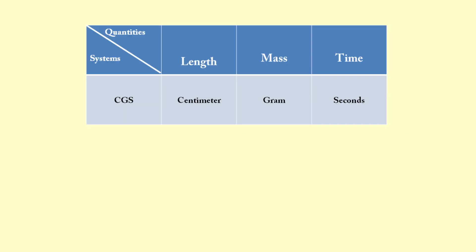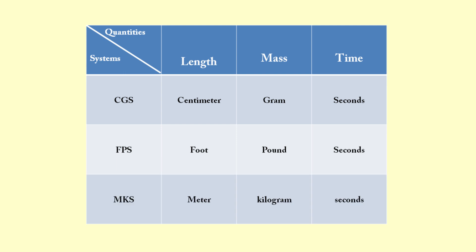Before 1971, scientists from different countries were using different systems of units. The first is the CGS system, where length was measured in centimeters, mass in grams, and time in seconds. Then we have the FPS system, where length was measured in foot, mass in pound, and time in seconds. Finally we have the MKS system, where length was measured in meters, mass in kilograms, and time in seconds.